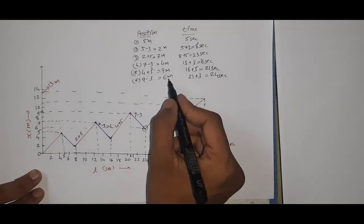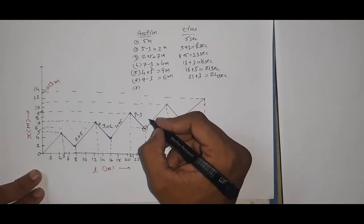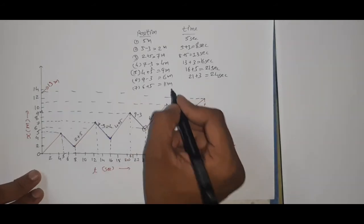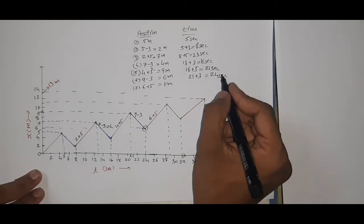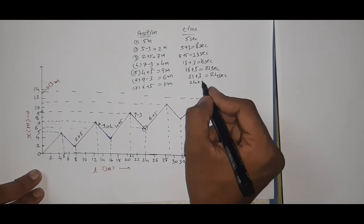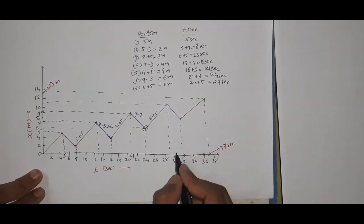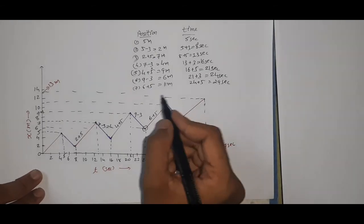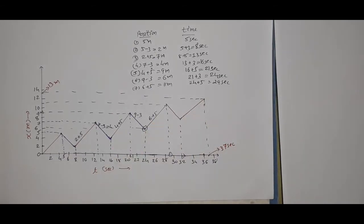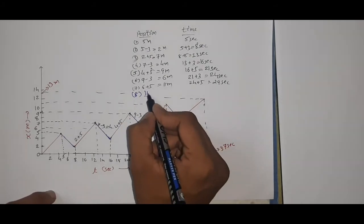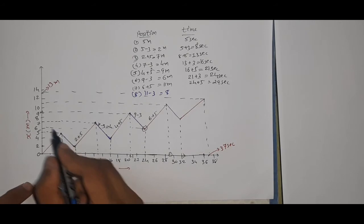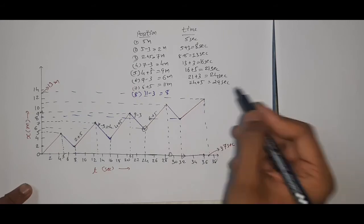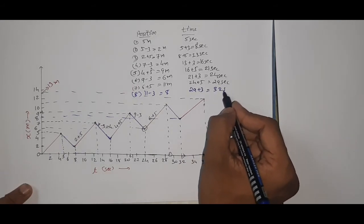At 6 meters, next we take 5 steps forward: 6 plus 5 is 11 meters. Time is 24 plus 5, which is 29 seconds. Then 3 steps back: 11 minus 3 is 8 meters. Time is 29 plus 3, which is 32 seconds. So at 32 seconds, position is 8 meters.